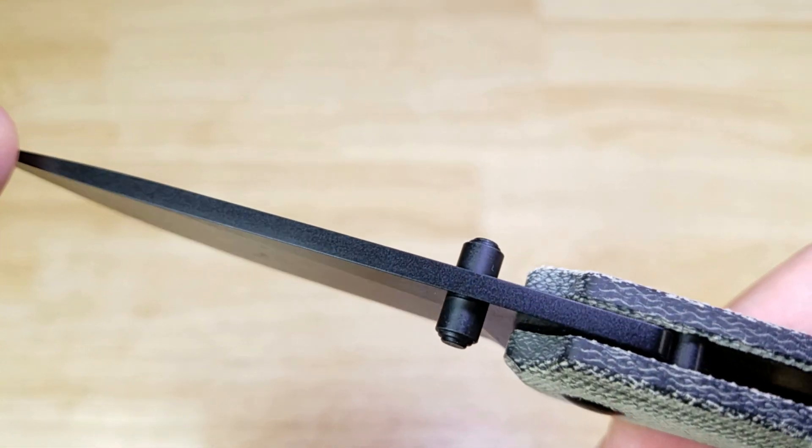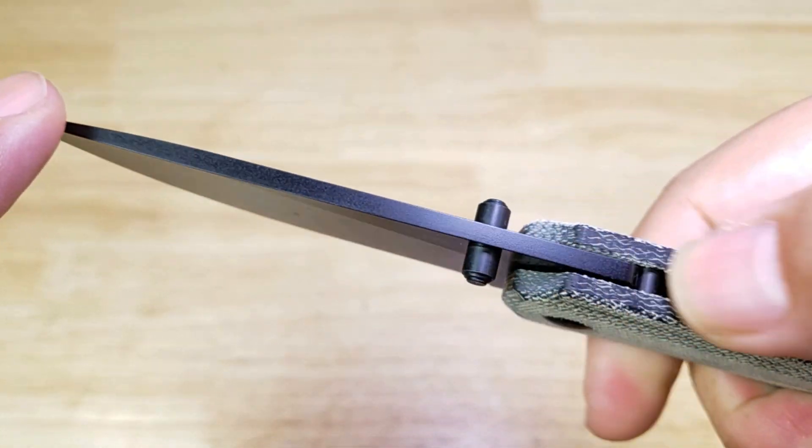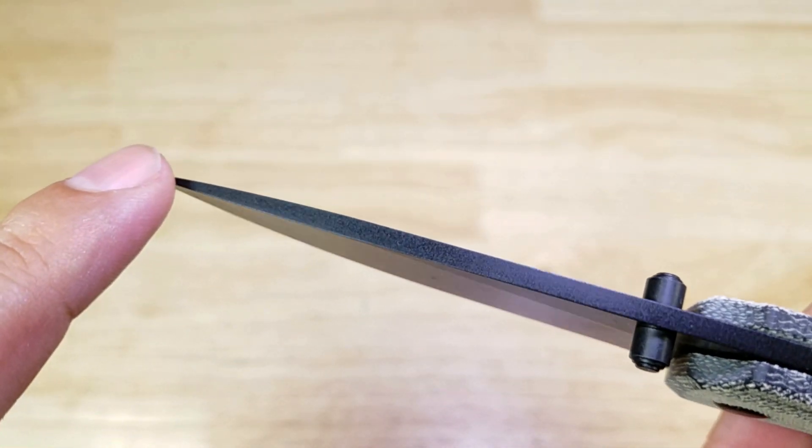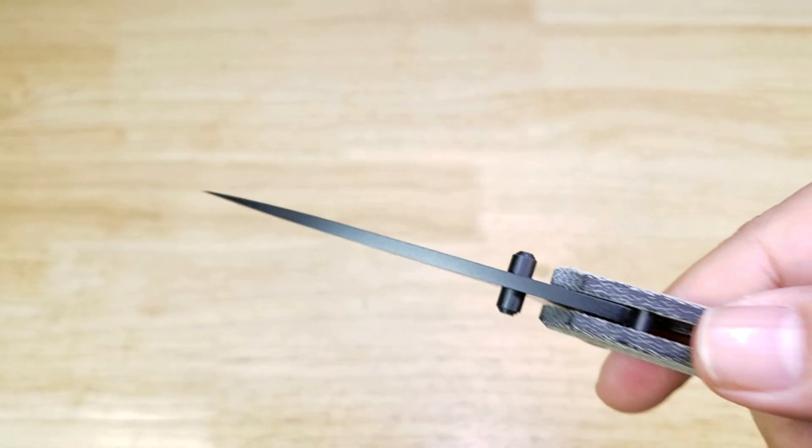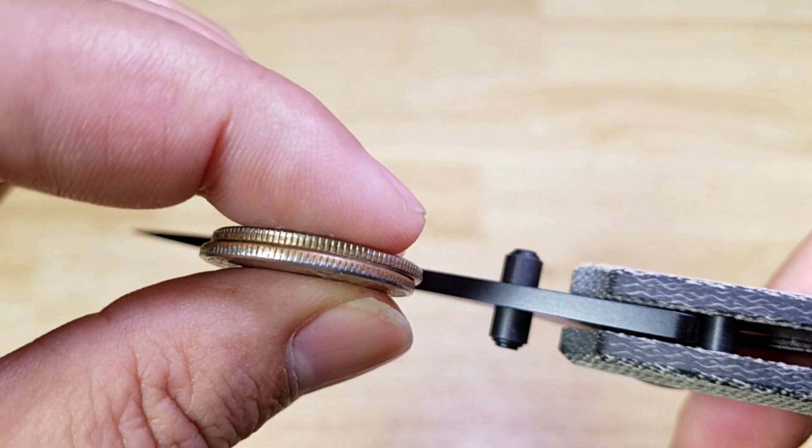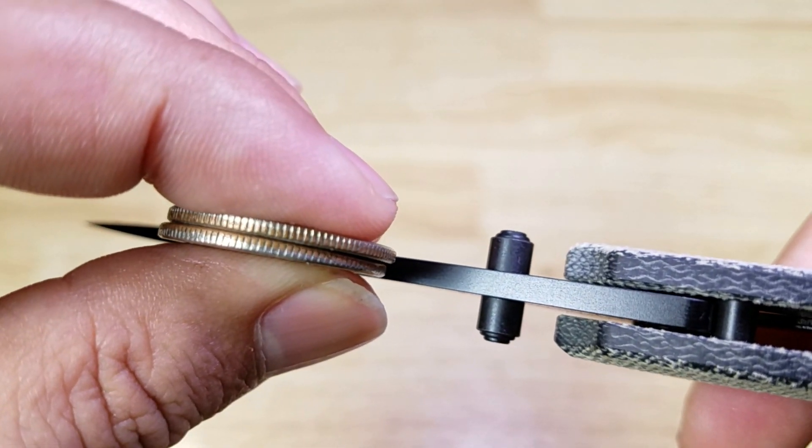Let's have a look at the spine of the knife. We have no jimping on the thumb ramp area. It's smooth all the way down here to the tip. And that's pretty thick. That looks like it's about two quarters thick. Yeah, just about two quarters thick.